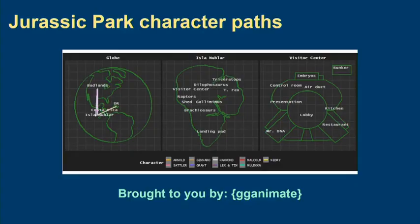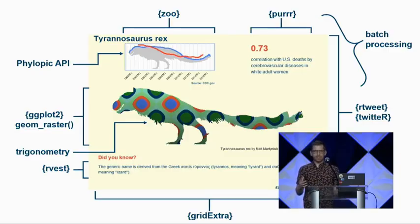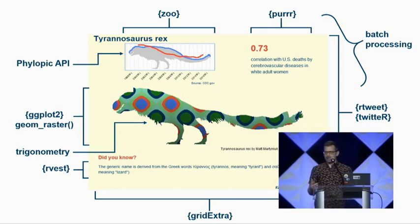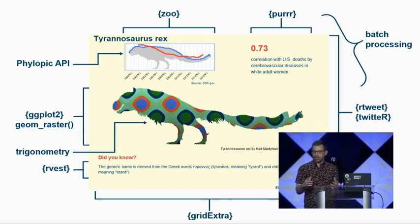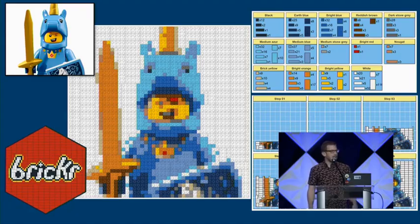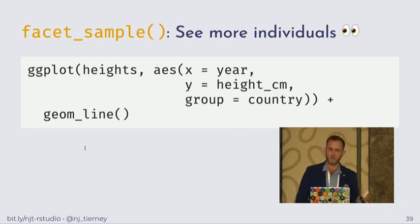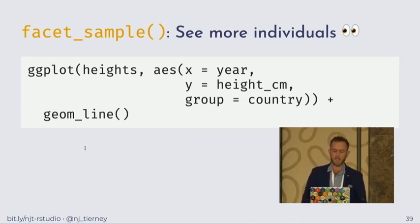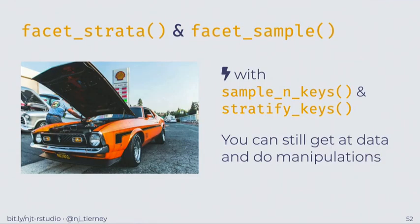I want to learn how to make animated ggplots. Geom raster actually lets me draw a dinosaur on a ggplot. Grid extra lets you arrange a lot of ggplots on the same chart. You can take an image into a ggplot — loaded the SVG into the ggplot. Here is some ggplot code: we have ggplot of our heights dataset on the x-axis, through a ggplot extension.